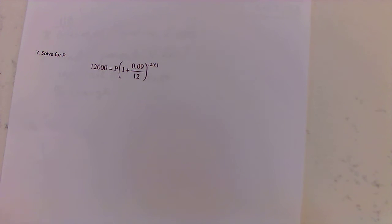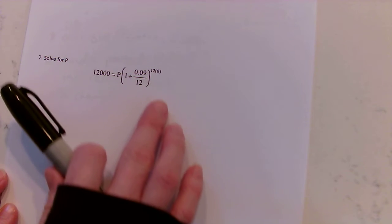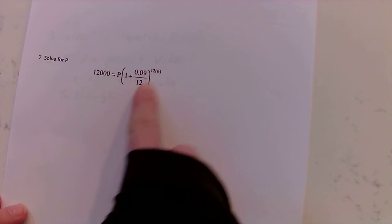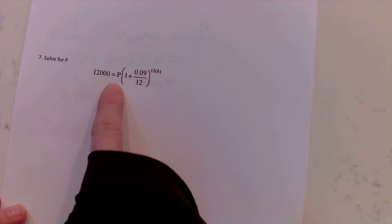Okay, so if you flip your worksheet over, number seven. We're solving for p, but we've got kind of a lot going on here. We've got an exponent here, I've got stuff in the parentheses, and then I have p on this side. So I need to get all this stuff figured out and move it to that side and isolate p.